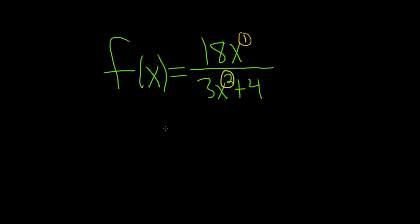Whenever it's bigger on the bottom, the answer is y equals 0 every single time. So as long as the degree is bigger on the bottom, the answer is y equals 0.